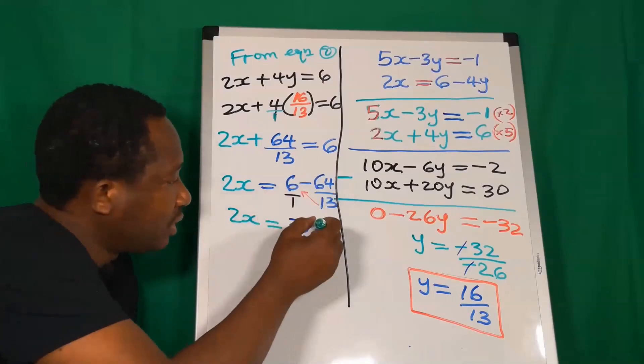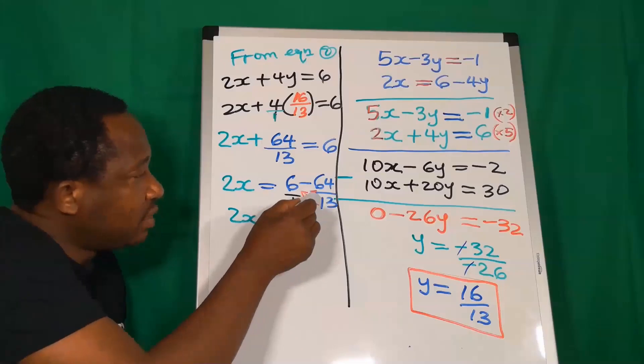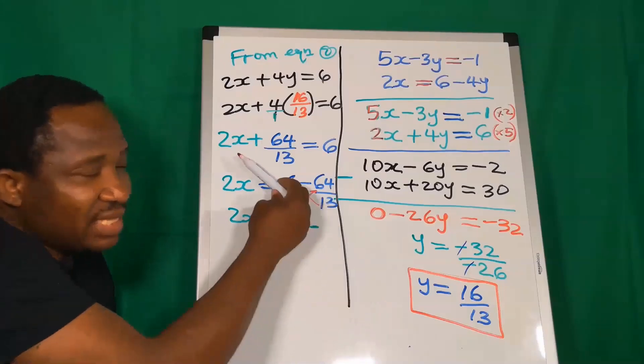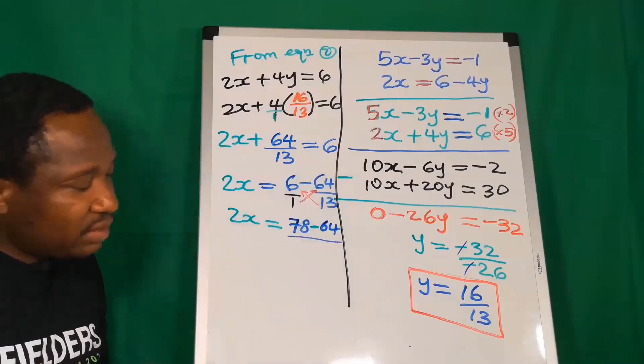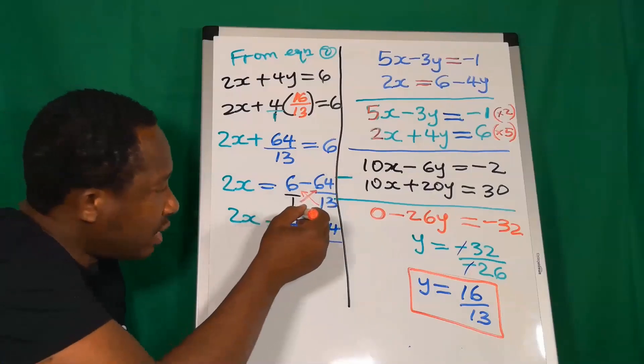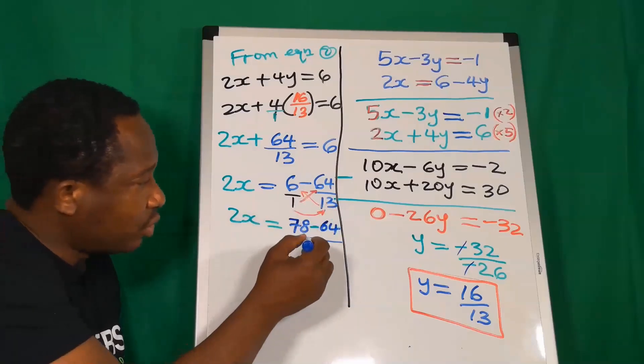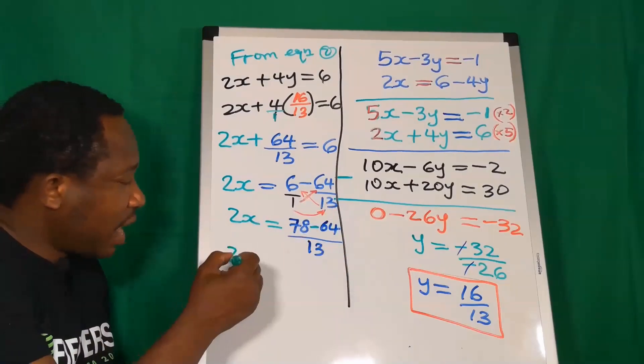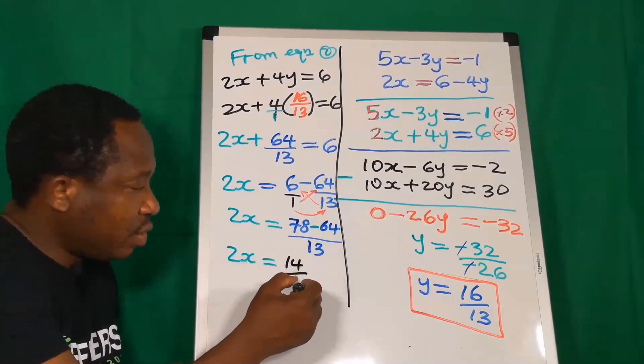I will return this minus. I will multiply 64. Remember, I went like this first, then like this. At the denominator, 1 will now multiply 13, and we're going to have 13. I have 2x. Here, I have 14 over 13.